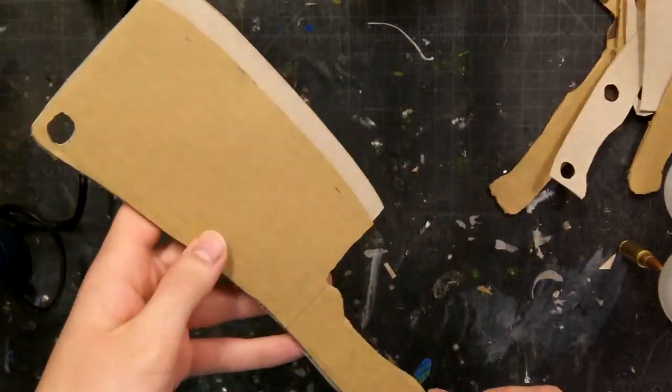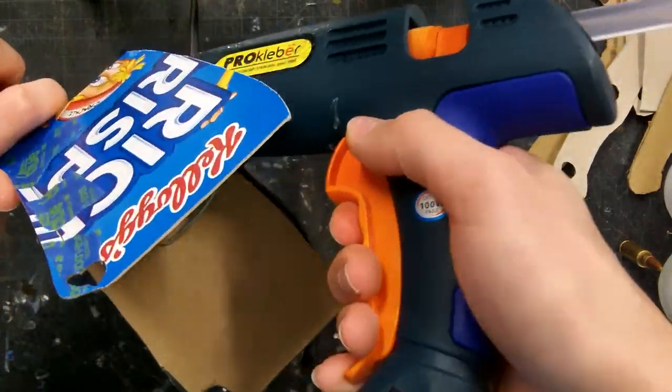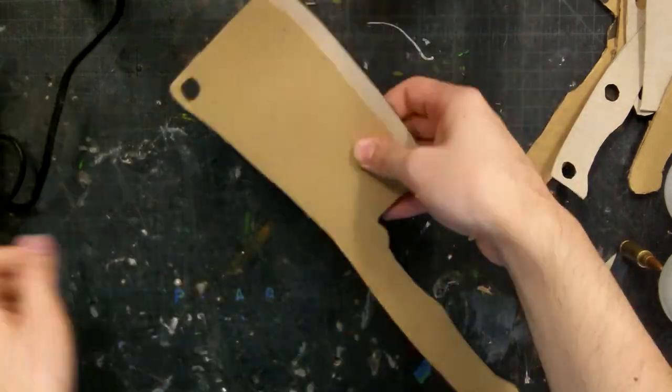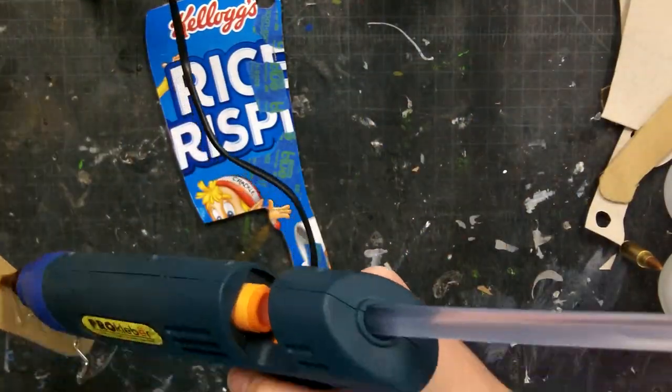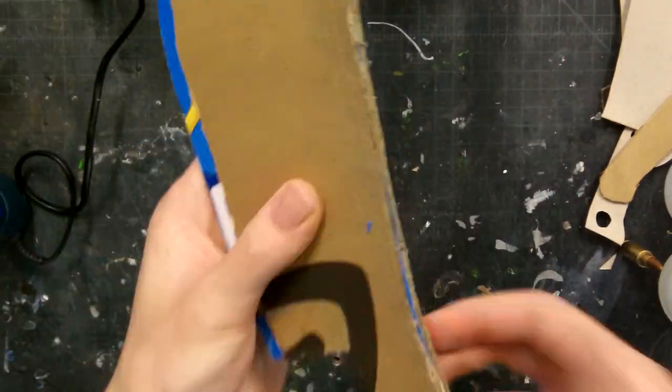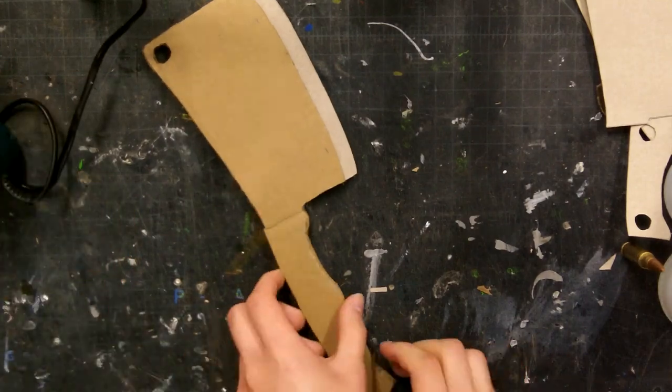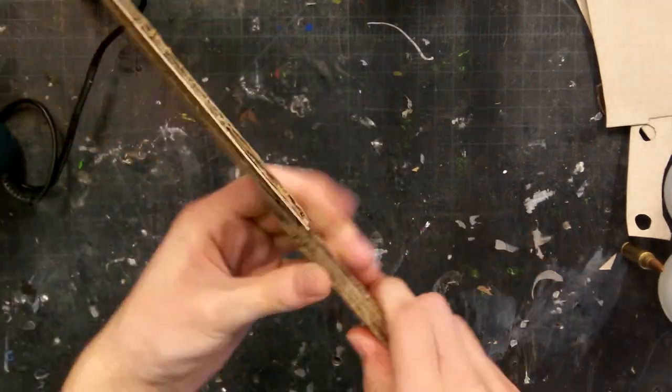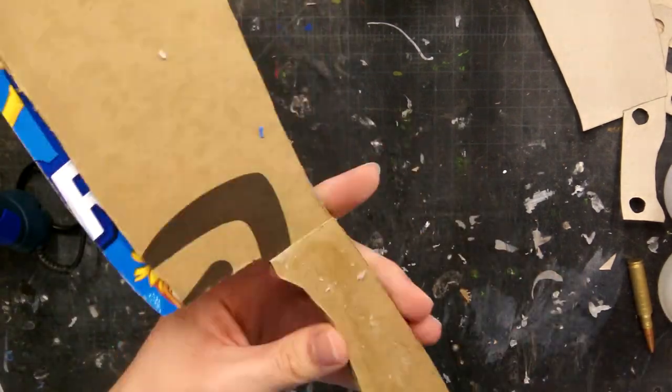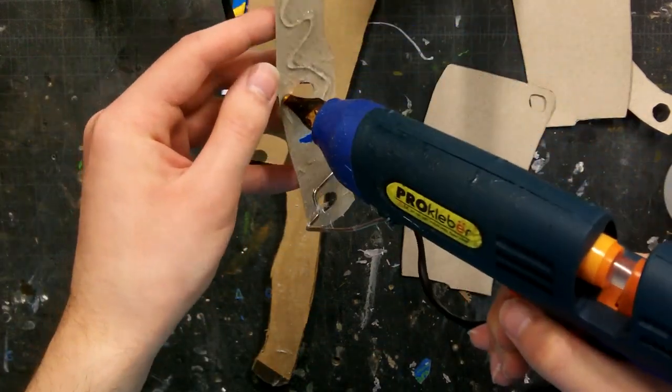Then I glued everything together with hot glue starting with the first piece I cut out from cardboard and those two pieces I cut out of thicker cardboard. Just glued those together, make sure everything is lined up. Then I glued on the handles. Then I glued on the detail pieces for the handle.